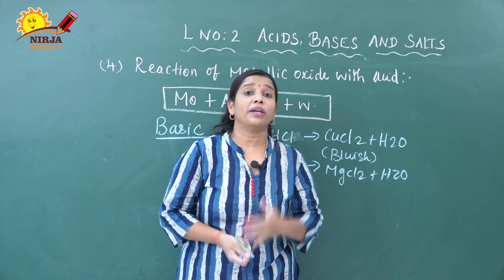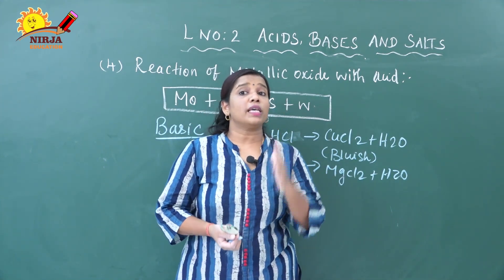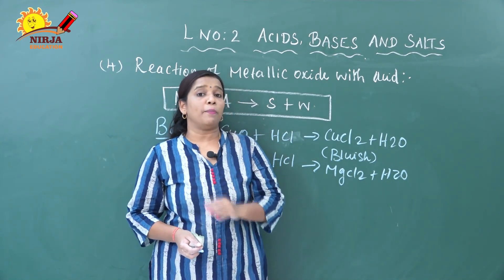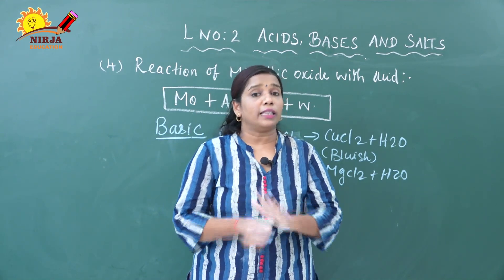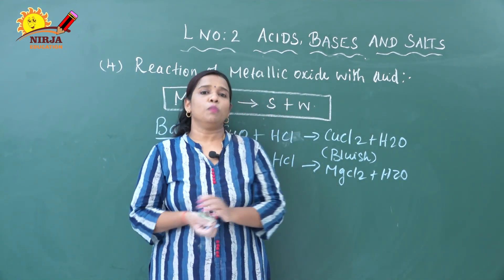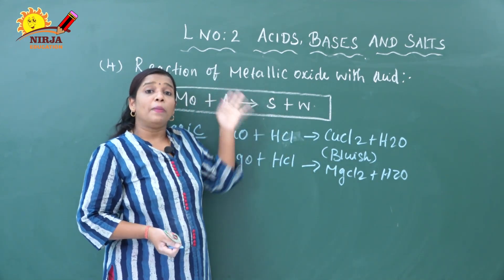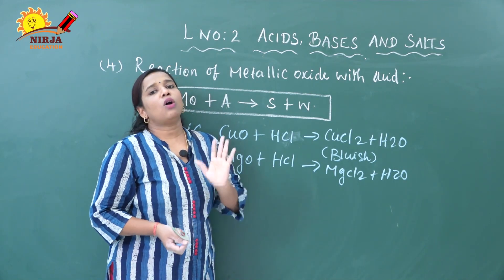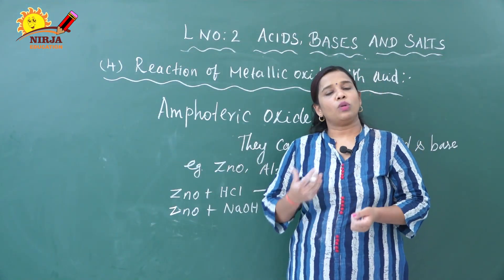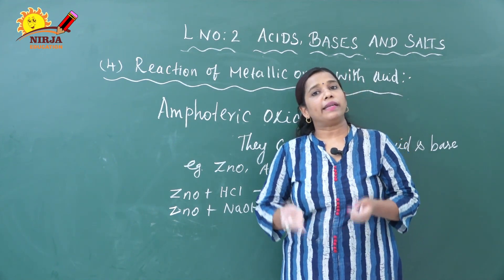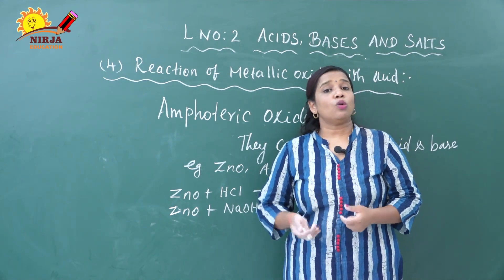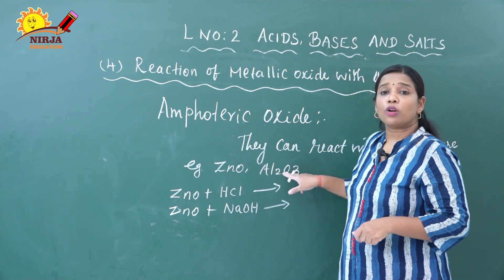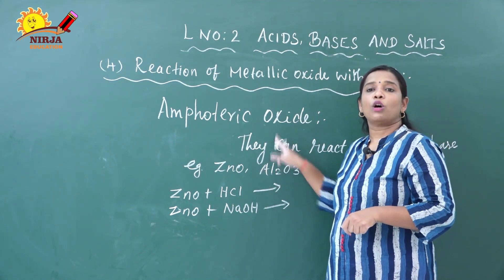But some metallic oxides react with both acid as well as base — those oxides are called amphoteric oxides. This is very, very important — take a note of it. Amphoteric oxides are the oxides which react with both acid as well as base. Examples of amphoteric oxides are zinc oxide (ZnO) and aluminum oxide (Al₂O₃).